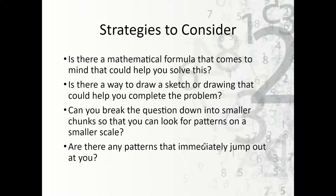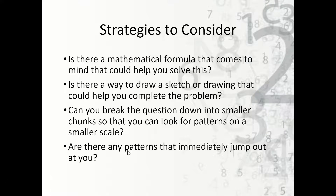Now let's talk about some strategies we can use to help solve this. First, is there a mathematical formula or equation you can write to figure out which lockers will be open? If not, is there a way to sketch or draw a graph or some kind of visual aid? If not, can we break the question down into smaller chunks — maybe do 20 or 10 lockers instead of 100 and see if there's a recognizable pattern? If there's a pattern, we can expand it for the bigger problem. And lastly, are there any patterns that immediately jump out to you?